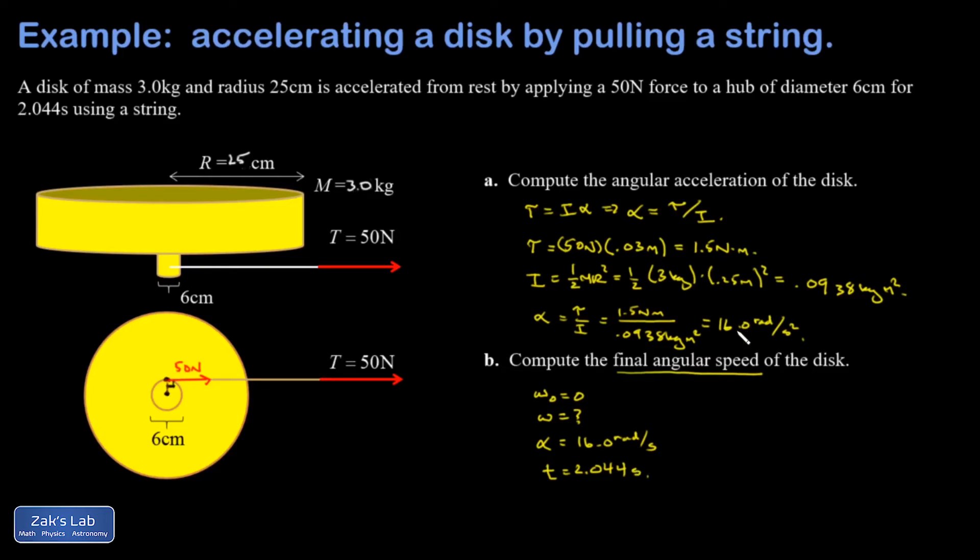And now I should be able to solve for the final angular speed. It's my second angular kinematics equation: omega equals omega naught plus alpha T. My original omega was 0, and I've already solved for the final speed that I'm looking for. So just plug in here.